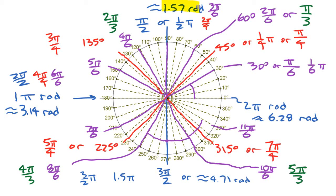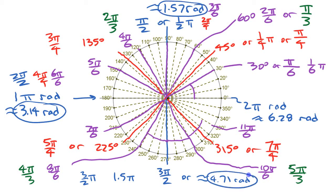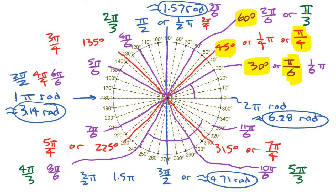You can write all these as exact value fractions or as decimal approximations. It helps to know the common ones: pi is roughly 3.14, half of pi is 1.57, one and a half pi is 4.71, and all the way around is 6.28. The key special angles to know are: 30 degrees = pi over 6, 45 degrees = pi over 4, 60 degrees = pi over 3, and 90 degrees = pi over 2.